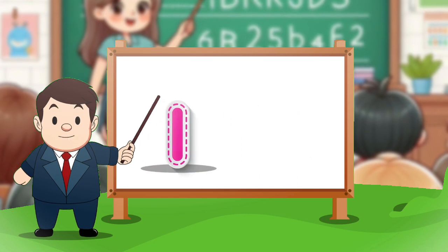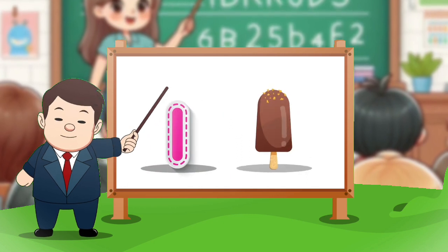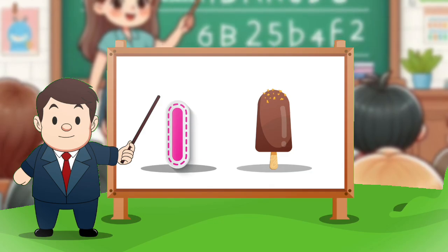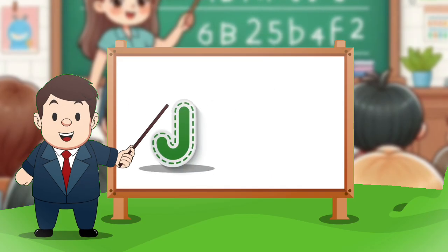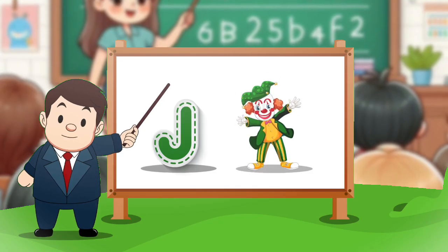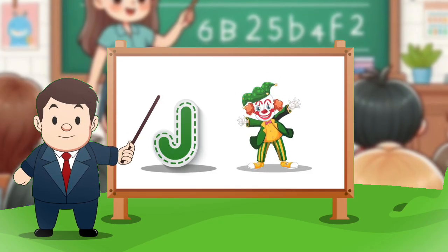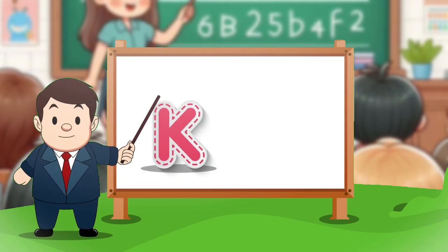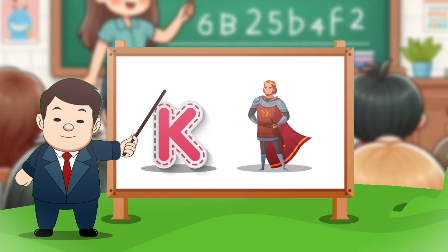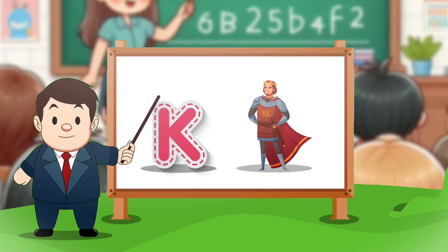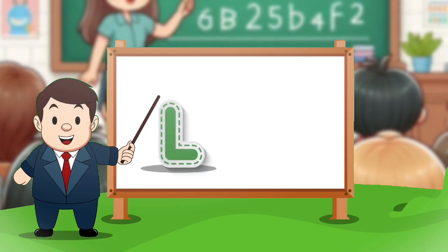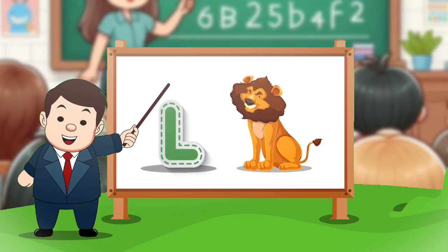I for ice cream. J for joker. K for king. L for lion.